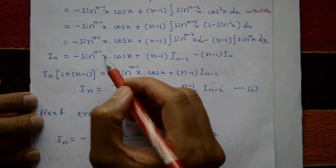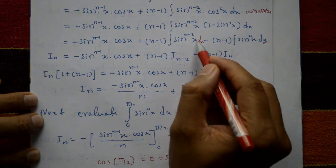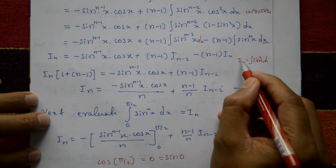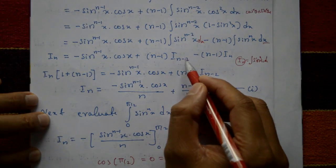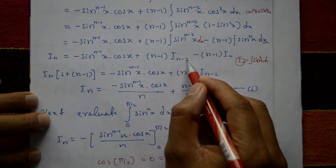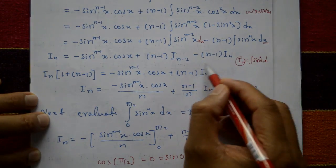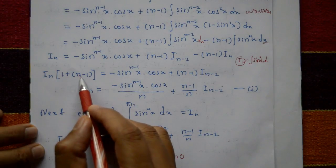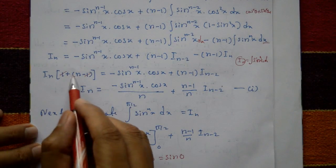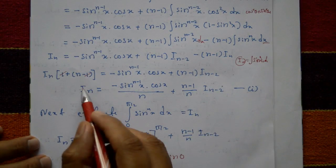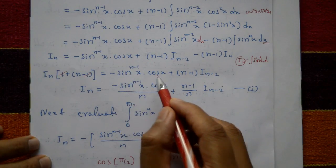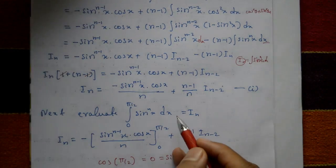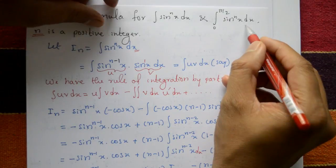Recognizing that ∫sinⁿ⁻²x dx = Iₙ₋₂ and ∫sinⁿx dx = Iₙ, we shift the Iₙ term to the left side. Factoring: Iₙ(1 + n−1) = Iₙ · n, giving us Equation 1: Iₙ = −sinⁿ⁻¹x · cosx / n + (n−1)/n · Iₙ₋₂.